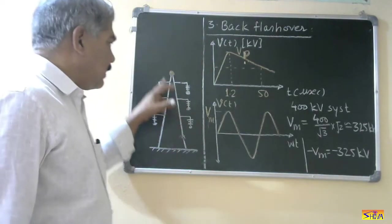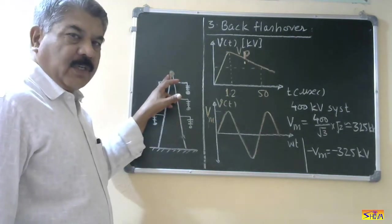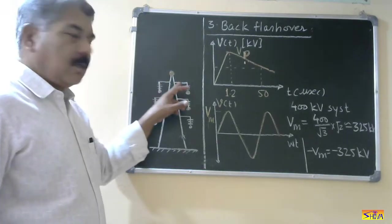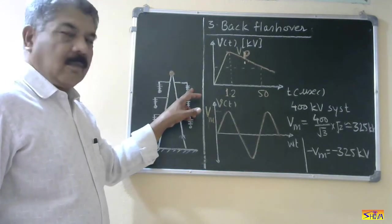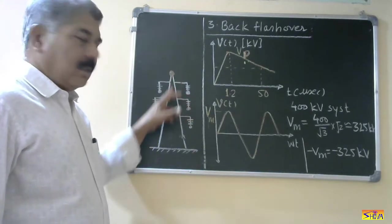Now this is the structure of the tower. This is position of ground conductor. Cross arm. These are insulators. This is power conductor. This tower is grounded.